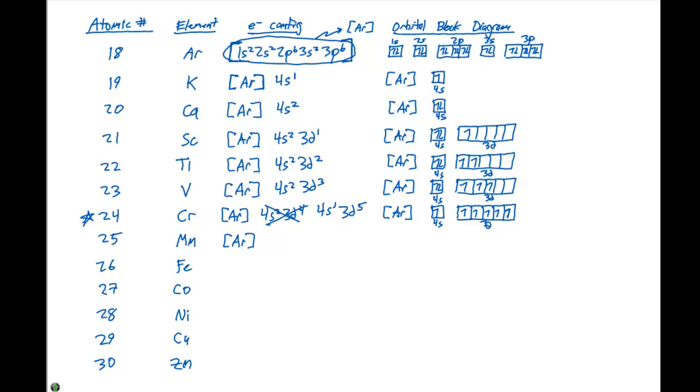For manganese, then, we now need 25 electrons. Argon is gonna give us 18. Then we need to go 4s2, 3d5. So, we're right back on track with what we would normally expect from our counting rules. We need to completely fill up the 4s orbital, and put one electron spin up in each of the 3d orbitals.